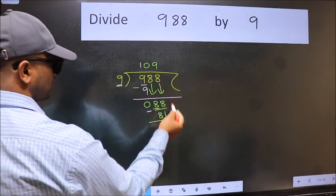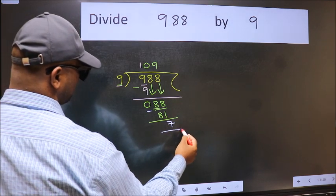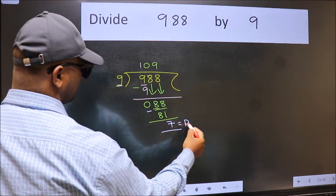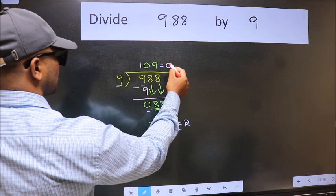No more numbers to bring it down. So we stop here. This is our remainder and this is our quotient.